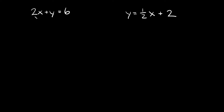I have two equations up here: 2x plus y is equal to 6, and y is equal to one-half x plus 2. Let's start with the one on the left. First of all, let's find the x-intercept of this equation. If you want to find the x-intercept, your y-coordinate has to be equal to zero. So if we're solving for the x-intercept, all I have to do is plug in a zero for y.